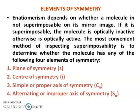What is element of symmetry? Enantiomerism depends on whether a molecule is not superimposable on its mirror image. If it is superimposable, the molecule is optically inactive, otherwise it is optically active. The most convenient method of inspecting superimposability is to determine whether the molecule has any of the following four elements of symmetry.